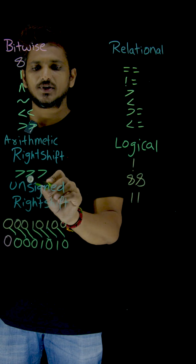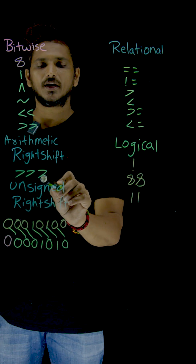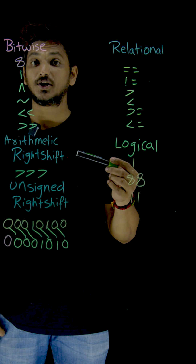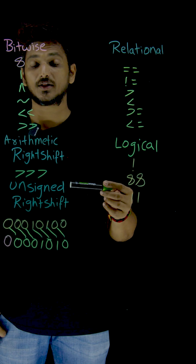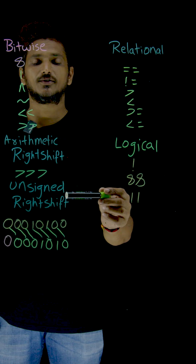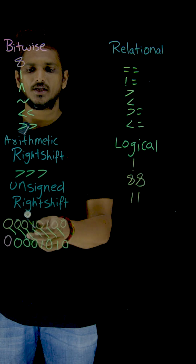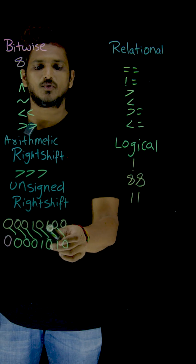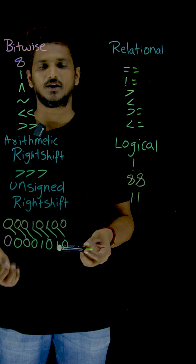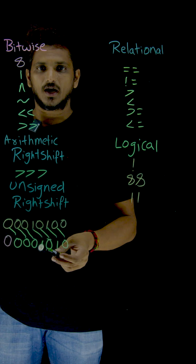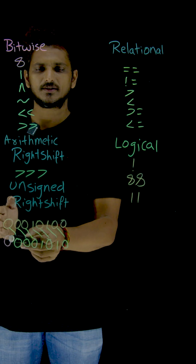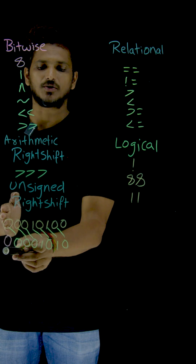Now coming to the new operator: the triple greater-than symbol (>>>). This is the unsigned right shift operator, which is new in Dart programming. To see how unsigned right shift works, consider the bit pattern: 0 0 0 0 1 0 1 0 1 0 0. With unsigned right shift, the rightmost bit is shifted out and a zero is placed at the leftmost position.